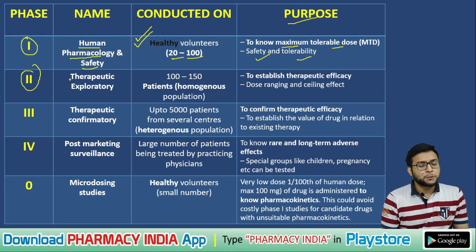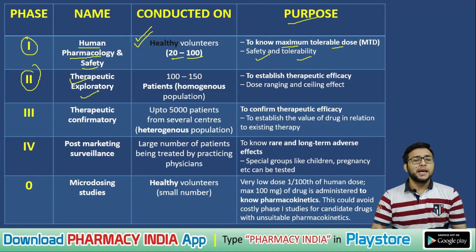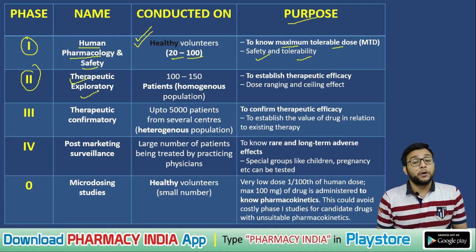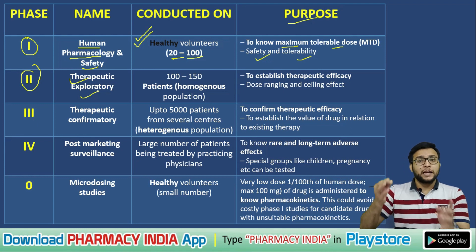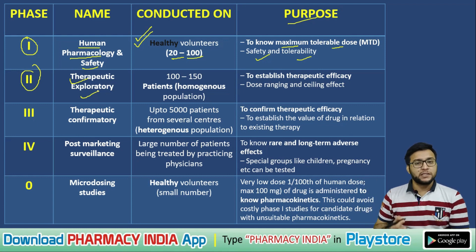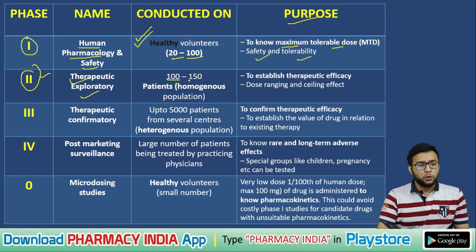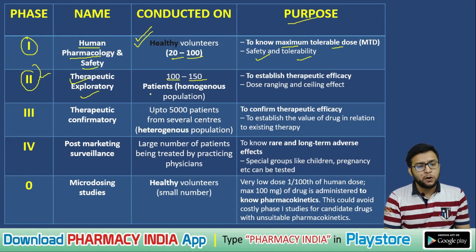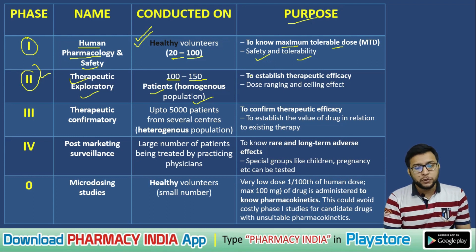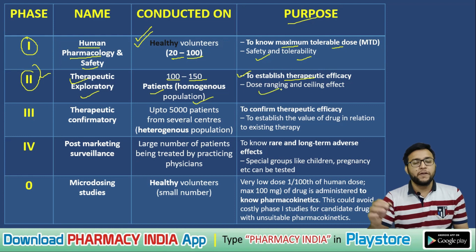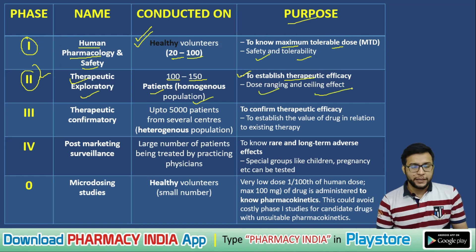Phase 2 is known as the Therapeutic Exploratory phase. A question may ask which phase is called therapeutic exploratory — the answer is Phase 2. It is conducted on 100 to 150 patients with a homogeneous population. Its purpose is to establish therapeutic efficacy, determine dose ranging, and check the ceiling effect.